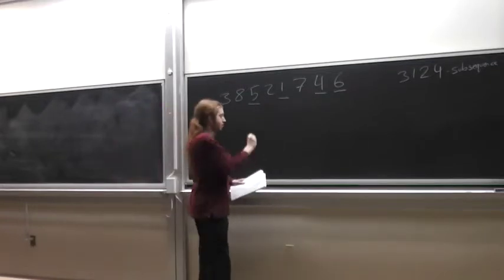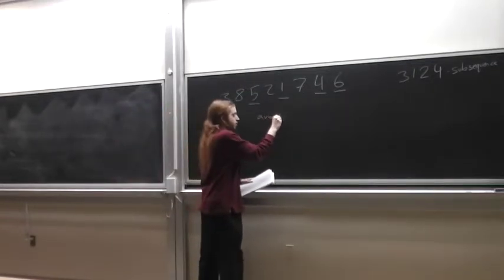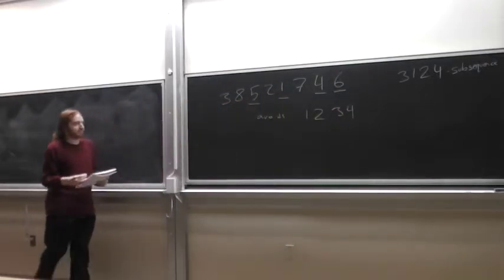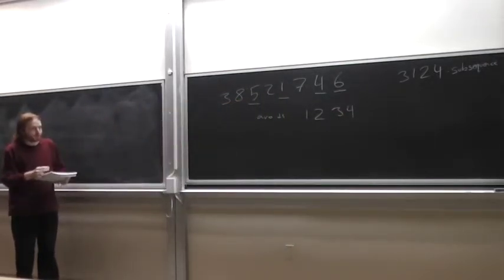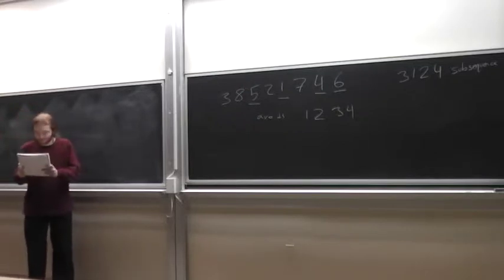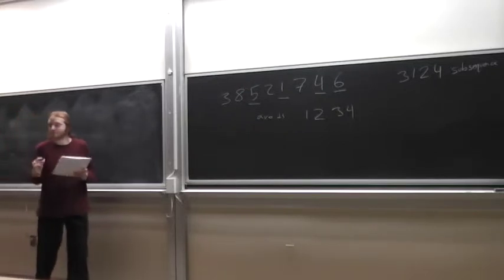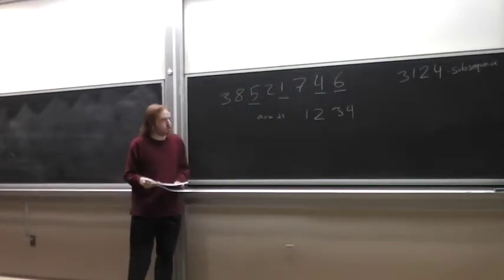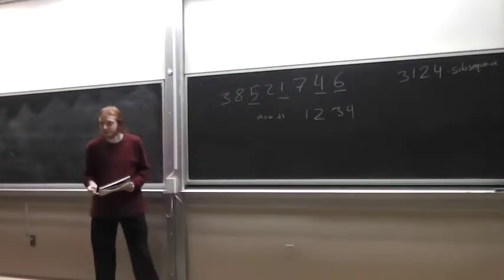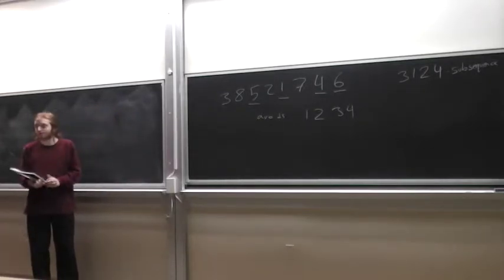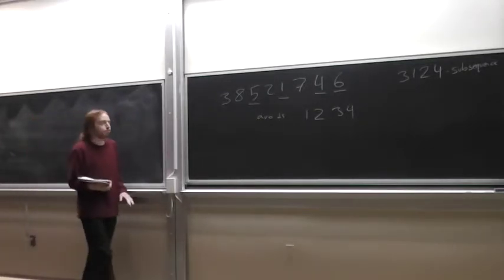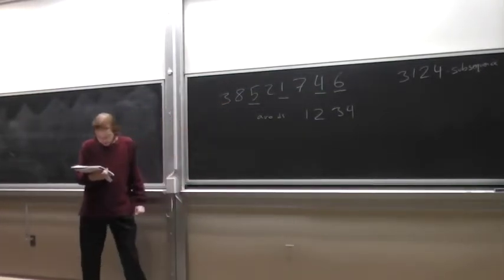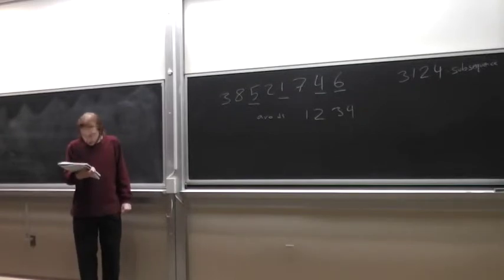And it avoids the pattern 1, 2, 3, 4. I hope. So if you can find 1, 2, 3, 4 there, I guess you win or something. So these definitions are, I'm not going to write them formally because you don't get anything out of that. But I hope it's clear what it means for a permutation to match or avoid a pattern.